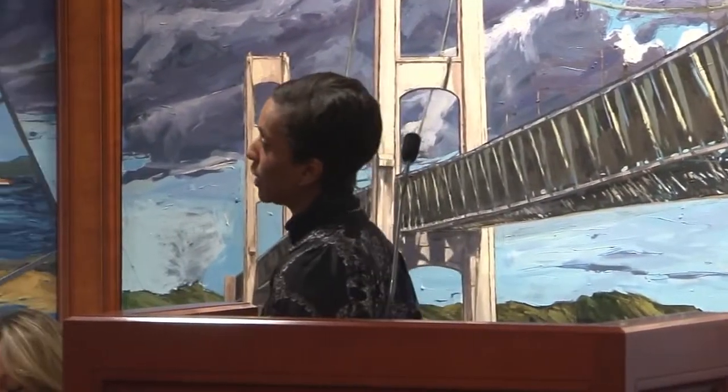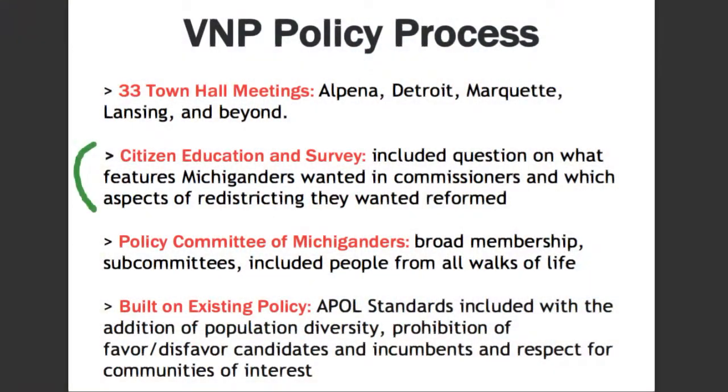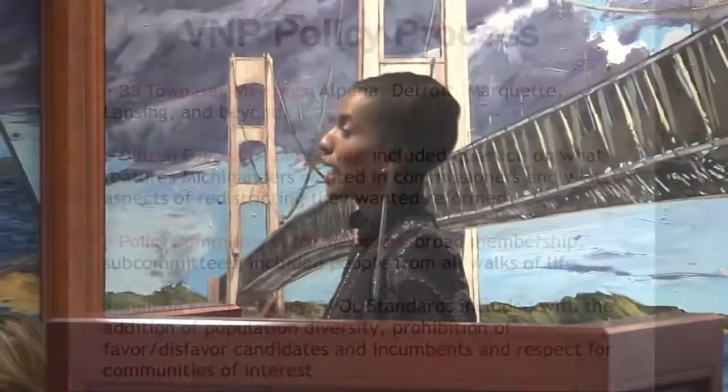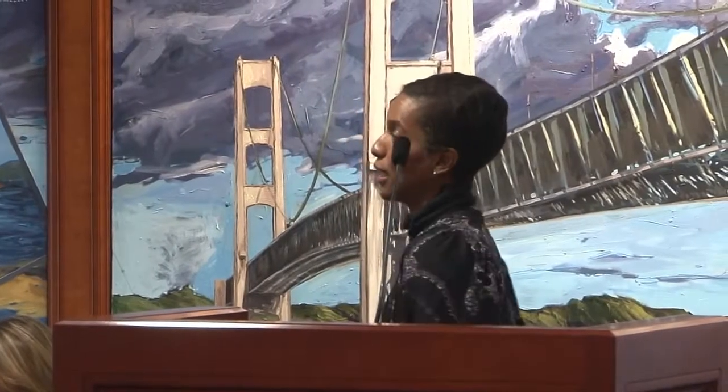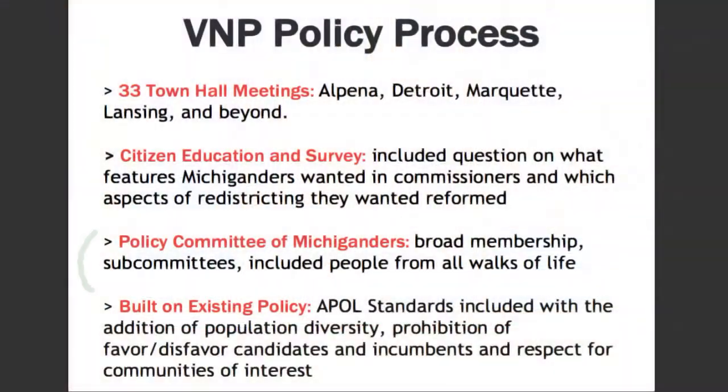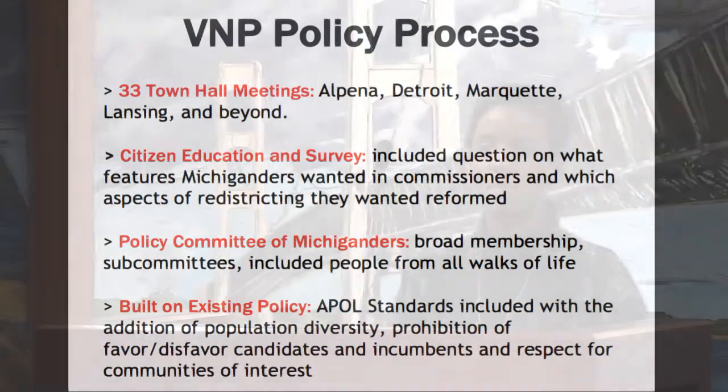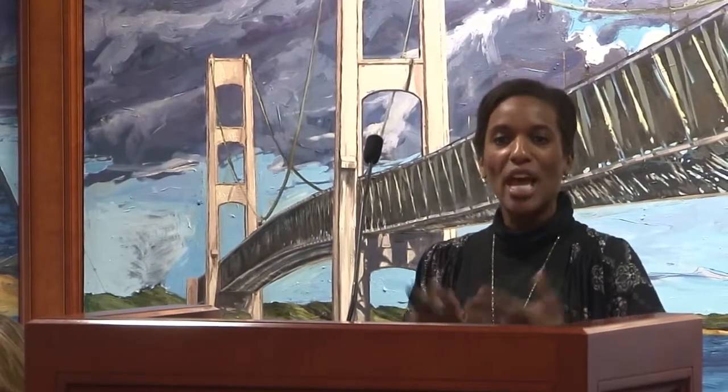We did a citizen education and survey. We included questions on what features Michiganders wanted to see in commissioners and what aspects of redistricting they wanted reformed. Behind the scenes, there was a policy committee of Michiganders with very broad membership — lawyers, political scientists, doulas, and veterinarians — essentially because we were a volunteer-led organization. If somebody came to us and said they'd like to volunteer or research a particular aspect, we said okay and found a way to incorporate them into the process.